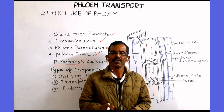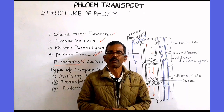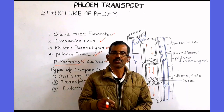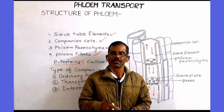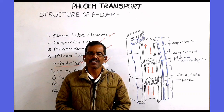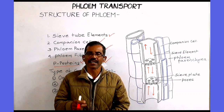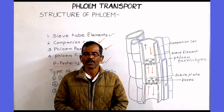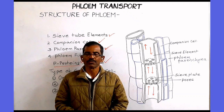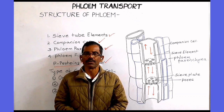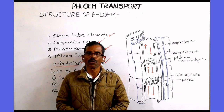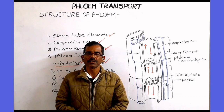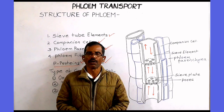In addition, in some species, the phloem also contains phloem fibers. Phloem fiber is a dead sclerenchyma cell that provides mechanical support to the phloem. This is all about the structure of phloem. In our next video, we shall discuss the composition of phloem sap.